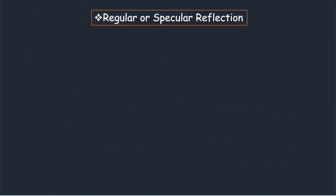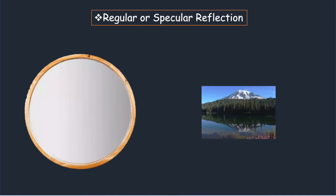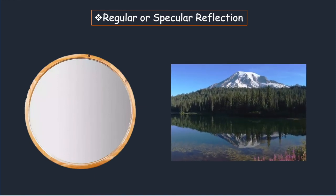Reflection from smooth surfaces such as mirrors or a calm body of water leads to a type of reflection known as specular reflection.